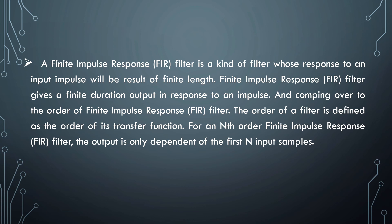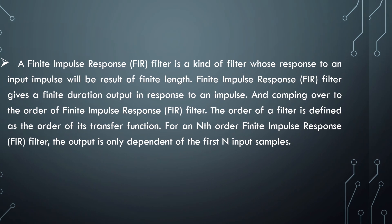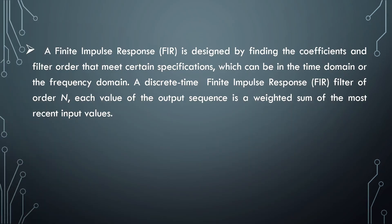Coming over to the order of a Finite Impulse Response filter: the order of a filter is defined as the order of its transfer function. For an Nth order FIR filter, the output is only dependent on the first N input samples. A Finite Impulse Response filter is designed by finding the coefficients and filter order that meet certain specifications, which can be in the time domain or the frequency domain.